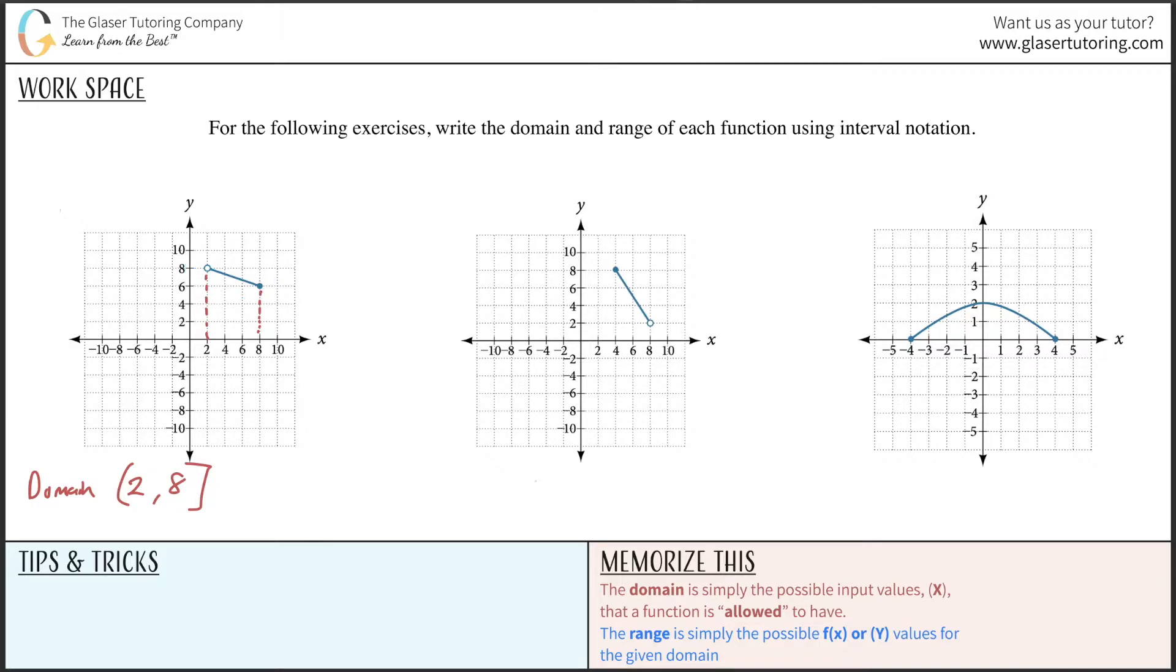Now for the range, which is the set of y values, notice the graph has a y value of 6 when x is 8, and it goes up to a point of 8 but doesn't equal 8 because it's an open circle. So when we think about range, we're going to have values going from inclusive of 6 all the way to 8 exclusive: [6, 8).